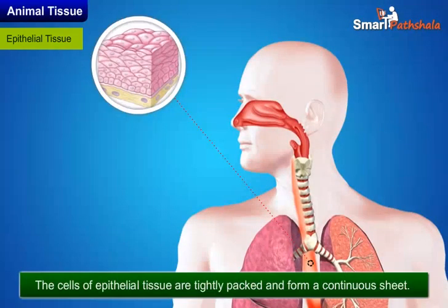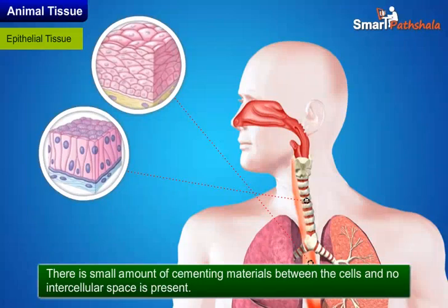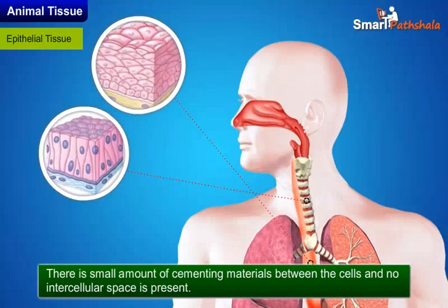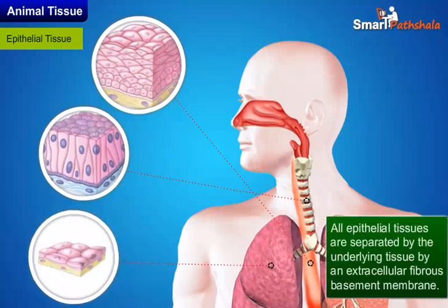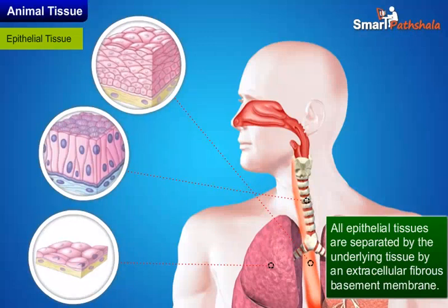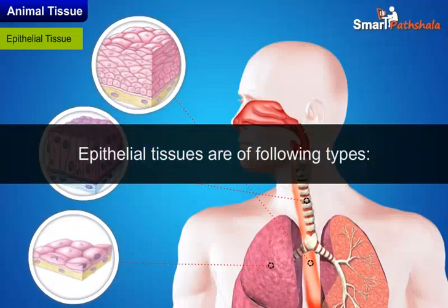The cells of epithelial tissue are tightly packed and form a continuous sheet. There is a small amount of cementing material between the cells and no intercellular space is present. All epithelial tissues are separated from the underlying tissue by an extracellular fibrous basement membrane.